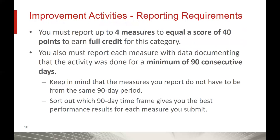What are the reporting requirements for the improvement activities performance category? You must report up to four measures to equal a score of 40 possible points to earn full credit — the maximum amount of points you can earn in this category is 40. You must submit each measure with data documenting that the activity was done for a minimum of 90 consecutive days. Importantly, the measures you report do not have to be from the same 90-day period, so you can select multiple different 90-day periods that make the most sense for your practice.